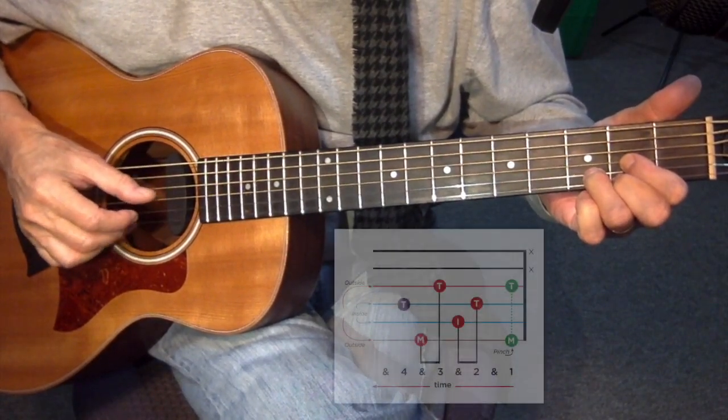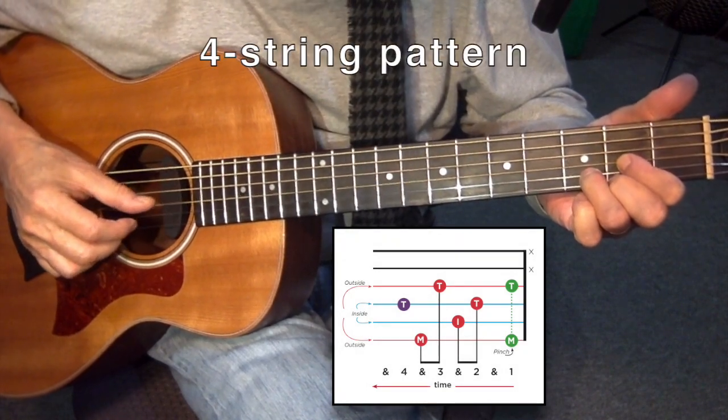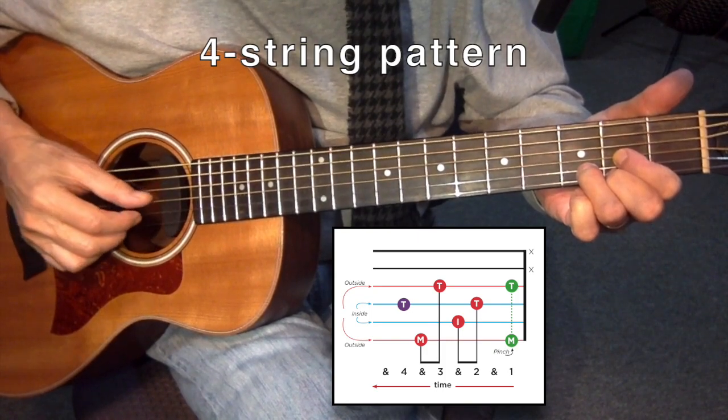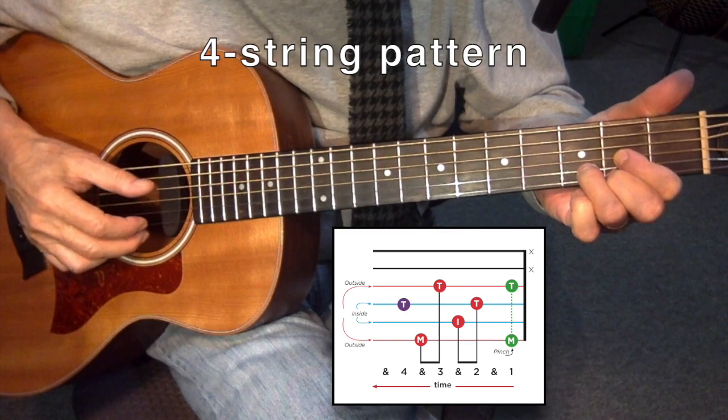Whether it's a four, five, or six string pattern, you have to start it off with that downbeat one where you include the bass note with the thumb and the high E string with the middle finger. And then you proceed with the rest of the pattern, whether it's a four, five, or six string pattern.